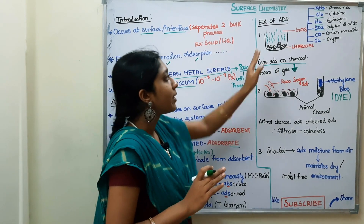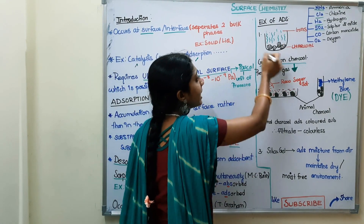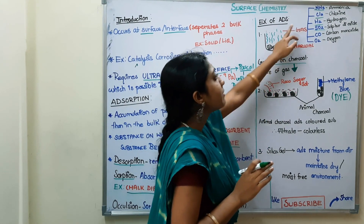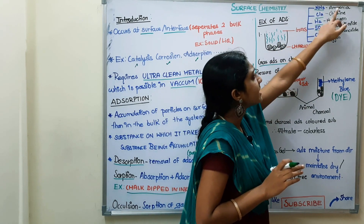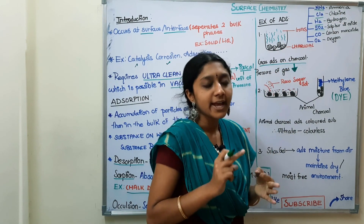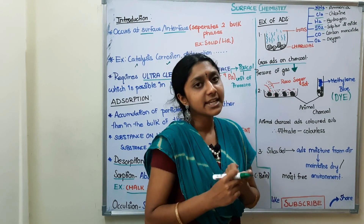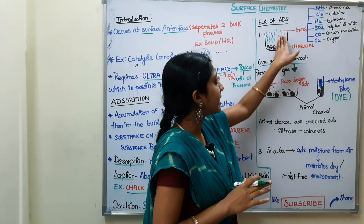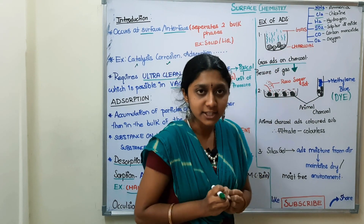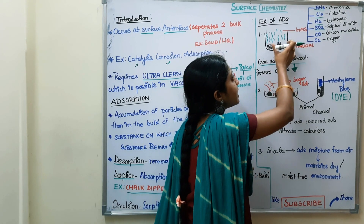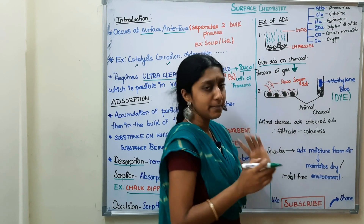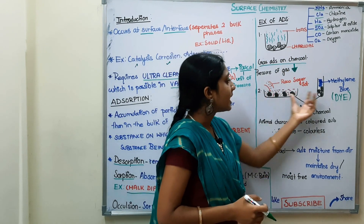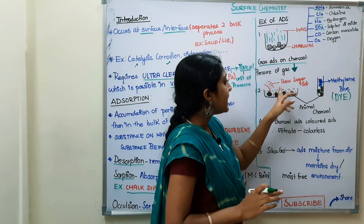Now, examples of adsorption. The first example is charcoal. Charcoal adsorbs gases such as NH3 (ammonia), HCl, H2, O2, CO2 (carbon dioxide), and SO2 (sulfur dioxide). If a gas is exposed to charcoal, the charcoal adsorbs the gas under pressure. This is the first example of adsorption.